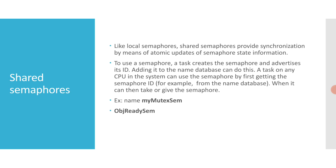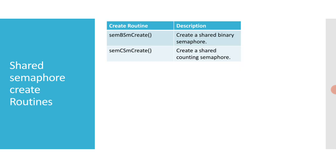There are two types of shared semaphores: binary and counting. Shared semaphores have their own create routines and return an SMID. The two routines are sem_b_sm_create — to create a shared binary semaphore — and sem_c_sm_create — to create a shared counting semaphore.